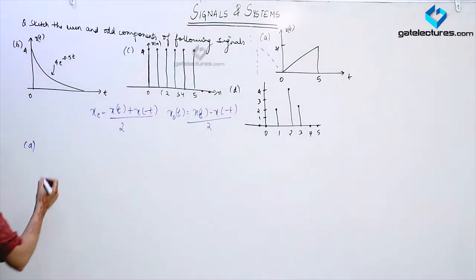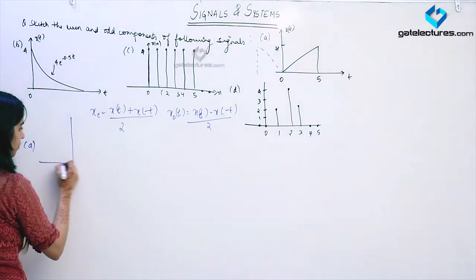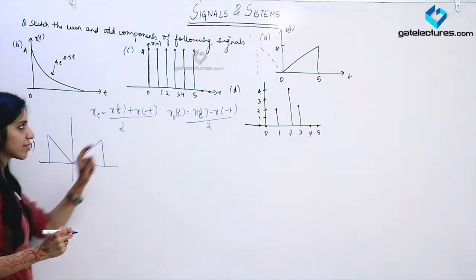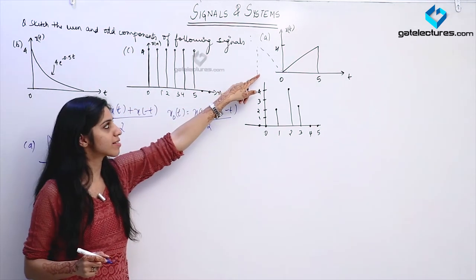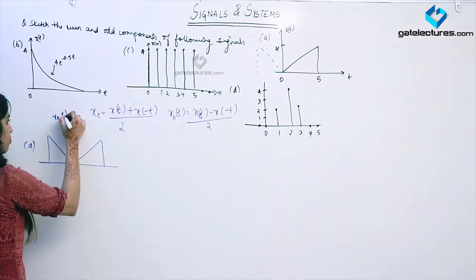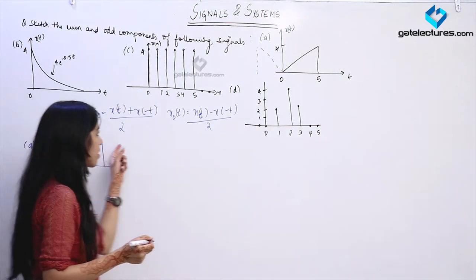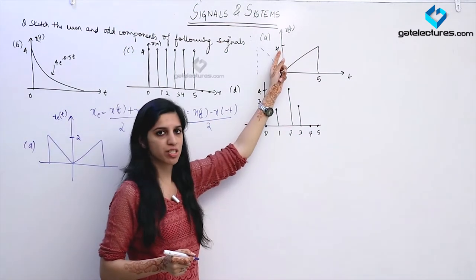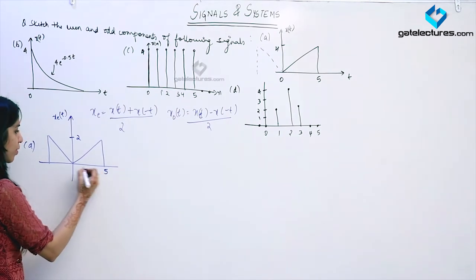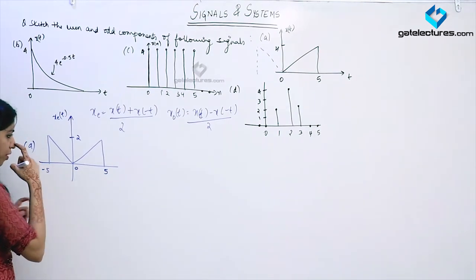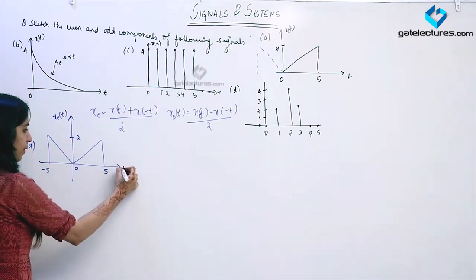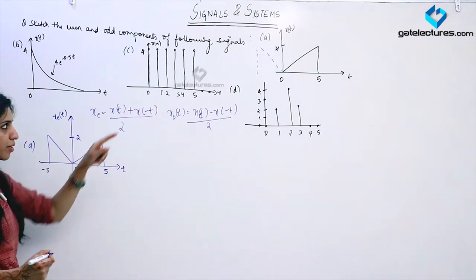When I sketch the even part of the signal, it looks like the original signal plus its time-reversed signal. This value is going to be 2 — because I am dividing by 2, and the initial value is 4, so dividing by 2 gives 2. The signal is going to lie from minus 5 to 5; this does not change because we are not performing any time operation. This is the even part of the first signal.